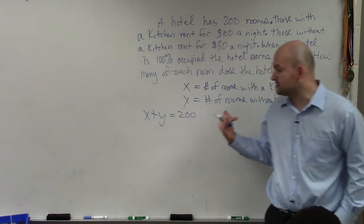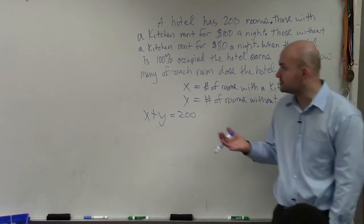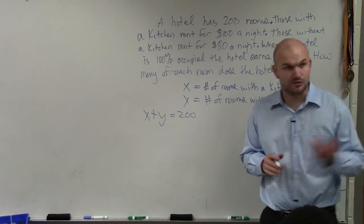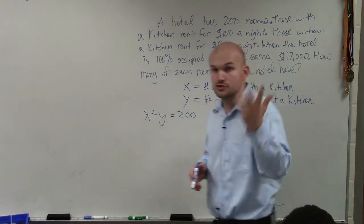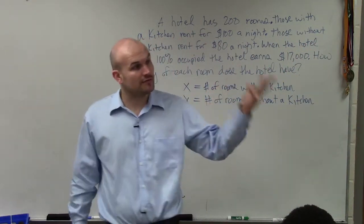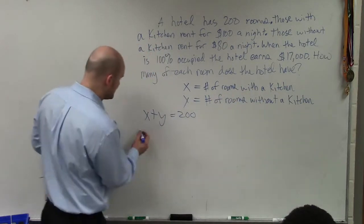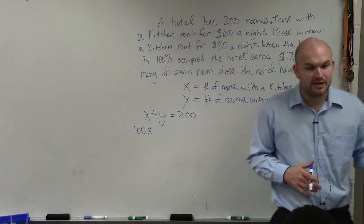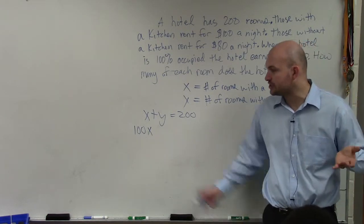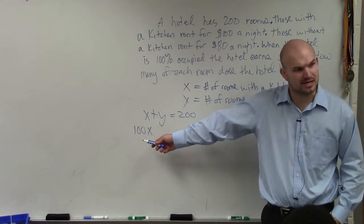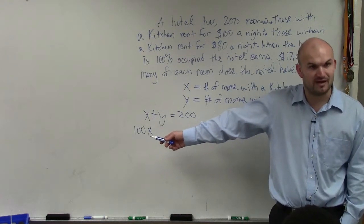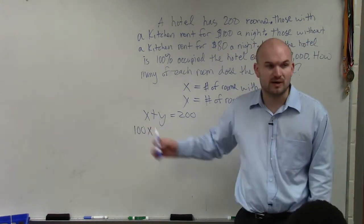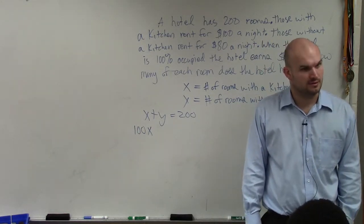The next equation is going to be a revenue equation. And if you think about it, they said a room costs $100 a night. So if you have one room, you get $100. Two rooms, $200. Three rooms, $300. And basically, what you're doing is taking however many rooms that you rent out with a kitchen, you multiply that number by 100, because that's how much you bring in. If I said, oh, we rented out 17 rooms, how much money would that be? You just multiply 17 times 100.